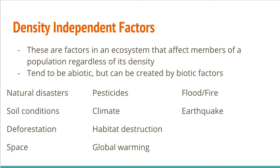Examples include natural disasters, soil conditions, deforestation, and the amount of physical space that's habitable in an area. None of those things change based off of population density. Pesticides are indiscriminate, and indiscriminate is a good way to describe these factors. So climate, habitat destruction, global warming, and specific natural disasters like floods, fires, earthquakes, and volcanoes are really good examples.